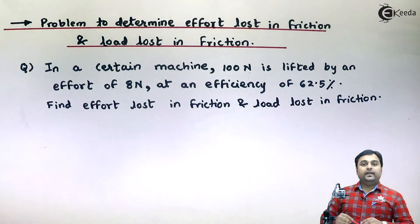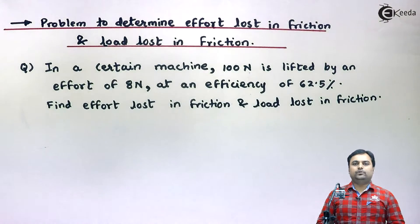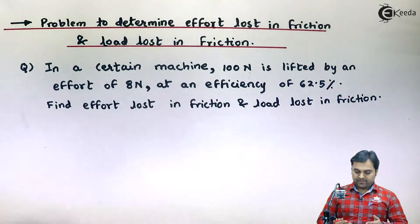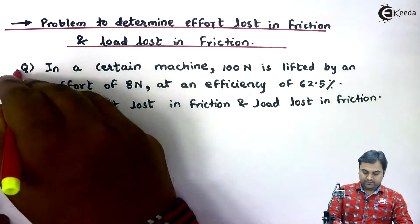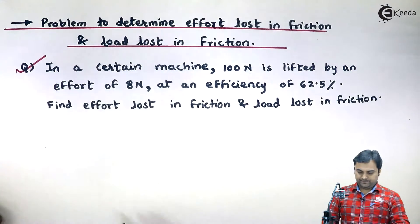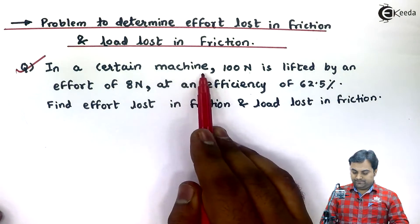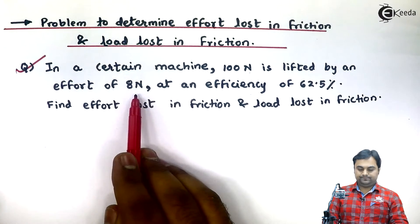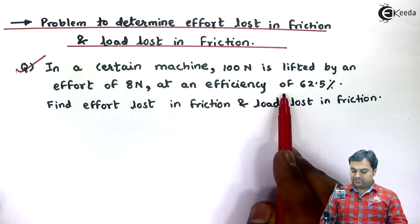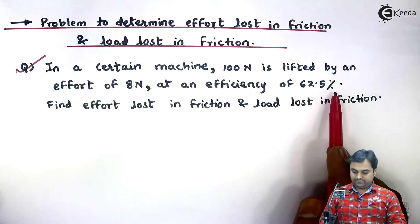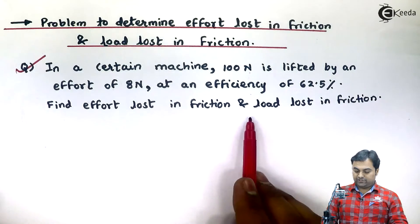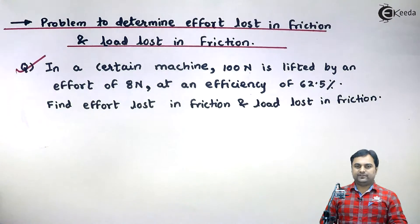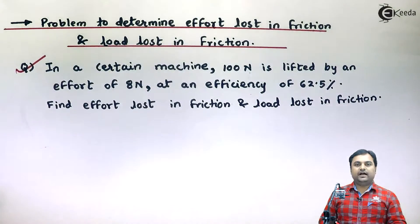Hello friends. In this video we will see a problem on effort lost in friction and load lost in friction. Here we have a question: in a certain machine, 100 Newton is lifted by an effort of 8 Newton at an efficiency of 62.5 percent. Find effort lost in friction and load lost in friction.